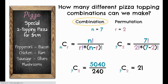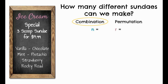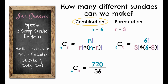For the ice cream options, there's a special for a three-scoop sundae for $4.99. We have six different flavor options, so n equals 6. The special is for a three-scoop sundae, so r equals 3 — that's how many we want to choose from the total. Plugging in 6 for n and 3 for r, you should get 20 as your answer.